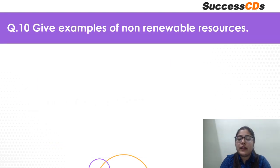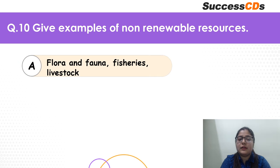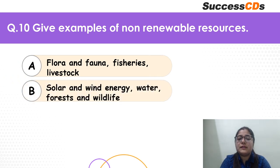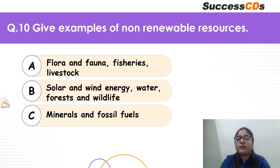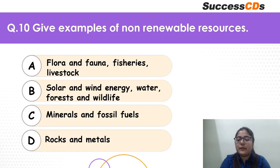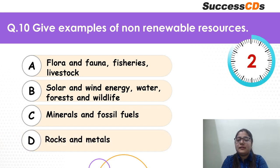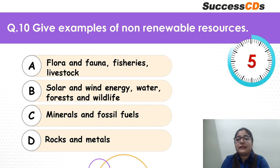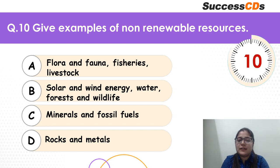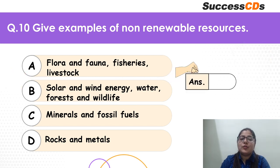Let's move to question 10: give examples of non-renewable resources. Flora and fauna, fisheries? Solar and wind energy, water forests? Mineral and fossil fuels? Or rocks and metals? Very very easy question again — you must answer before the time ends. It is C — minerals and fossil fuels.